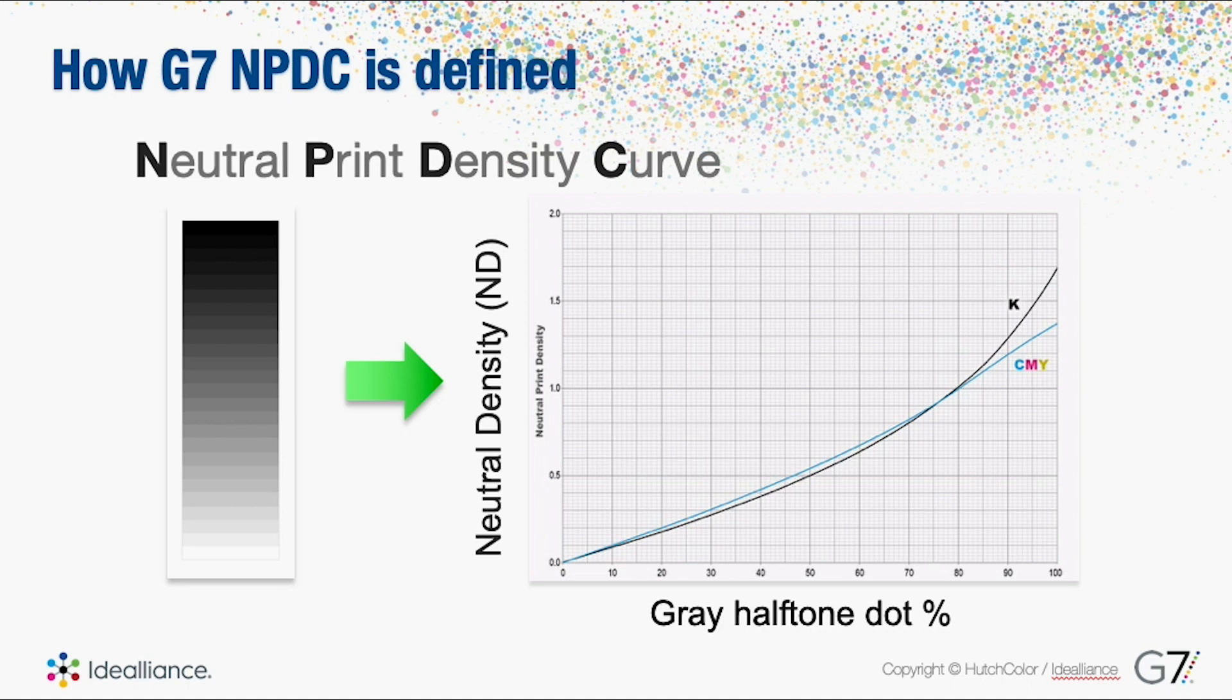We also have one for the CMY triplets. These are CMY percentages that are unambiguous that should reproduce a neutral gray in balance with the black channel. So it's the relationship between the gray halftone dot percentages and the neutral print density. That's a little deeper than I wanted to go, but I definitely want you to understand that the NPDC curves—there are two: one for the black and one for the CMY gray triplets.